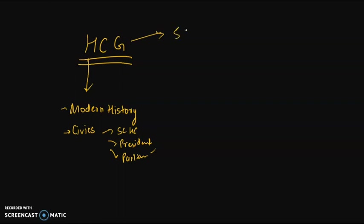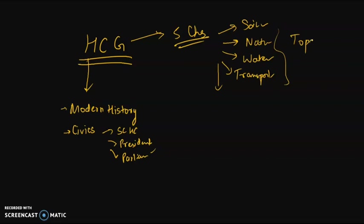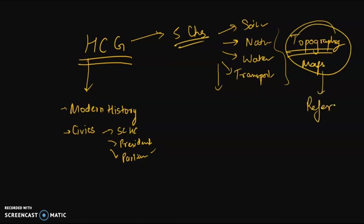For geography, you have to do any five chapters thoroughly. For example, soil you can do, then natural vegetation. Then we have water resources, transport. All these chapters can be done. Other chapters, you can choose it on your own. Topography is also important. Maps and topography. You can refer to my sister's video, Molly. She has explained this. And in one shot, you will be able to do all the questions of topography. You'll have no problem in this.